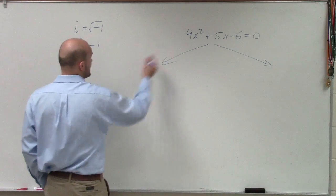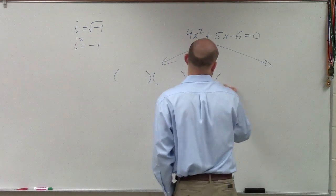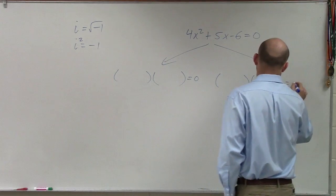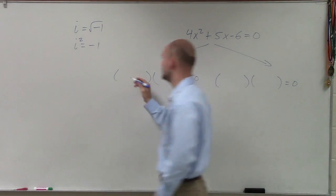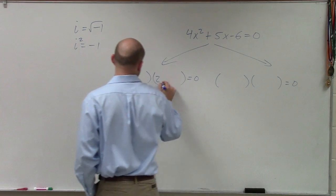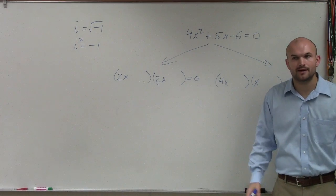But we know that we can factor this as two binomials. Now we know that the first two terms have to give us 4x squared, so it could either be 2x and 2x or 4x and x, right?